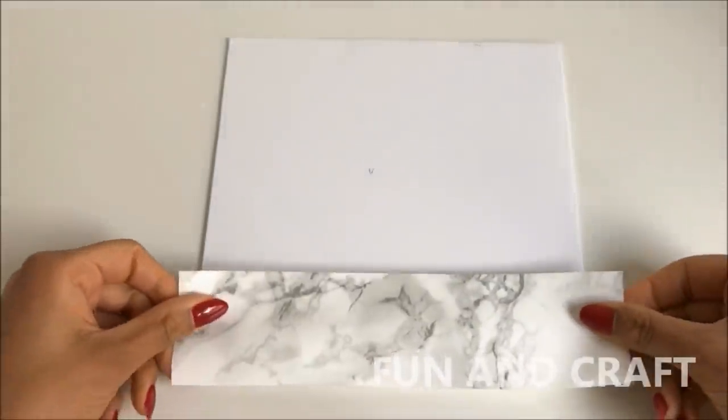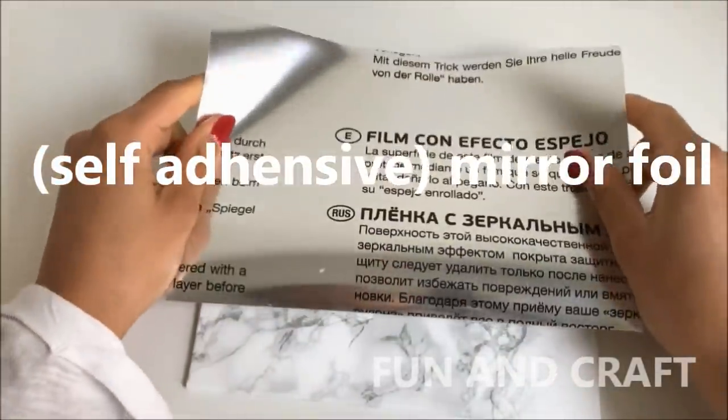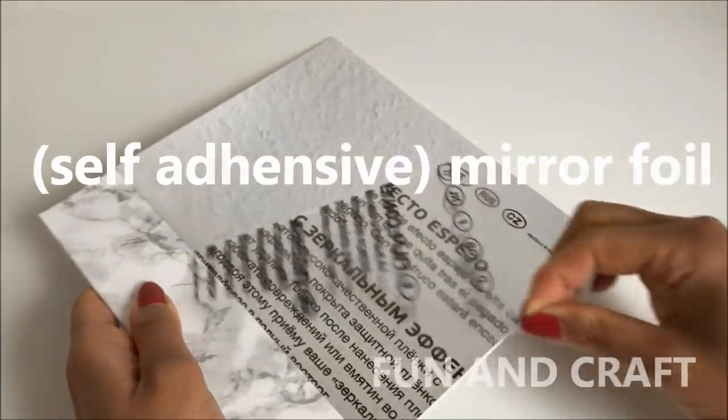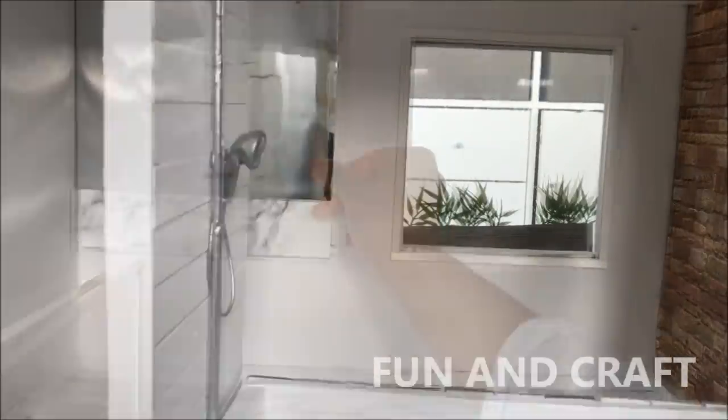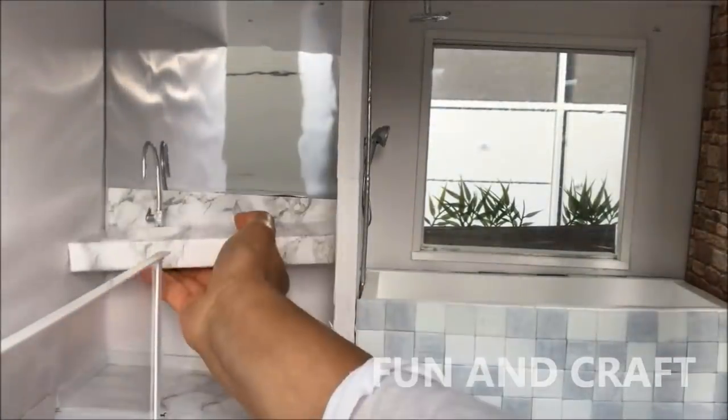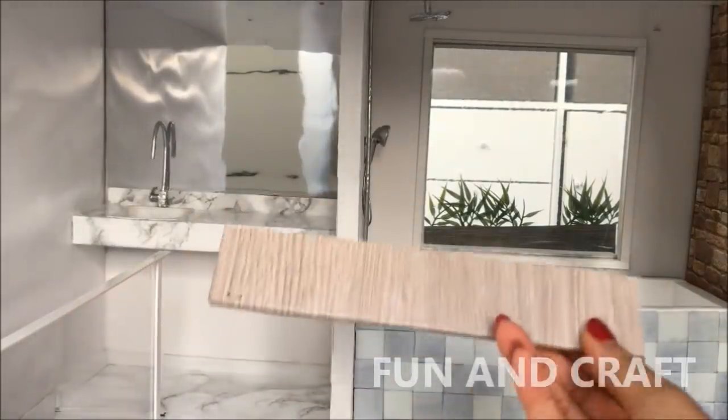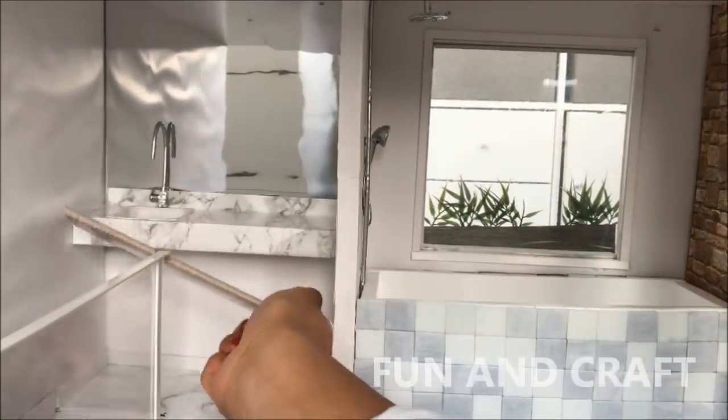Cut out a piece of foam board. Place marble contact paper on the bottom part and use self-adhesive mirror foil to make a big mirror. Pull off the protective film and place the mirror along with the sink and the tub in your dollhouse. I'm also going to glue a piece of foam board wrapped in contact paper underneath the sink to make a shelf.